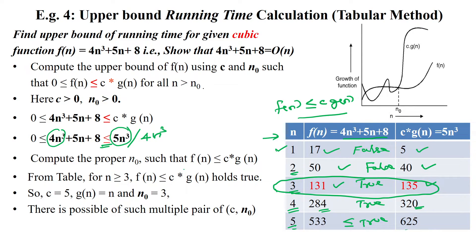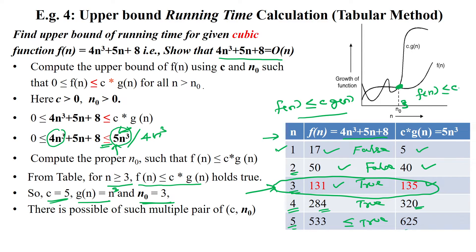For the given function 4n³ + 5n + 8, from n ≥ 3 onwards, it satisfies f(n) ≤ c·g(n). So here we can say the constant c = 5 and g(n) = n³. The initial input size n₀ = 3. From that point onwards in the graph, the condition f(n) ≤ c·g(n) is satisfied.